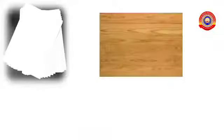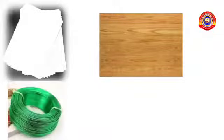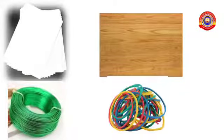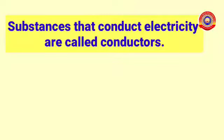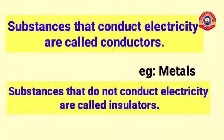Materials such as paper, wood, plastic wire, and rubber band don't conduct electricity. That means when these materials are used, it is said to be an open circuit, so the bulb doesn't glow. Based on electrical conductivity, substances are classified into two. Substances that conduct electricity are called conductors. Example: metals. Those which do not conduct electricity are called insulators. Example: paper.